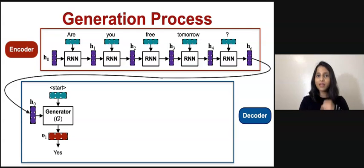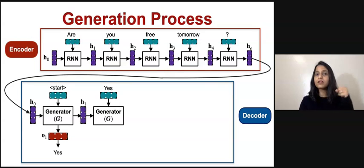The word yes, along with the hidden state that was created at the previous time step h_1, both of these yes and h_1 are passed to the next time step so that the generator produces the output state o_2.